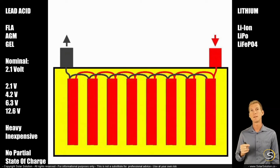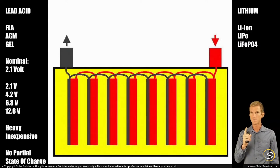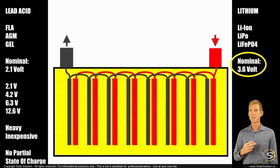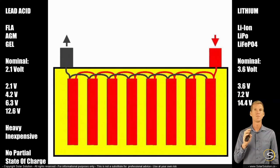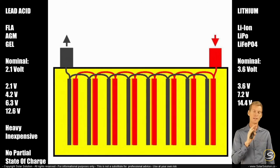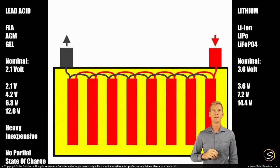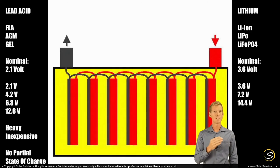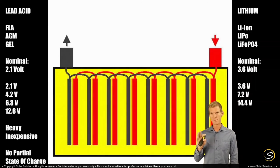An important difference between lithium and lead batteries is that their nominal voltage is different — substantially higher. The nominal voltage of one lithium cell is generally 3.6 volts. Combining multiple cells in series: two cells give 7.2 volts and four cells give 14.4 volts. This 14.4 volts is in a similar range to the 12.6 volts of a lead-acid battery with six cells, which is why they can often be used interchangeably. Typically, 12-volt nominal lithium-based batteries have a slightly higher voltage than lead-acid-based batteries.